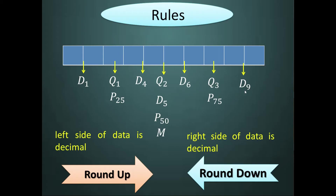Another example: if D sub 9 = 10.8, since D sub 9 is above 50% of the data, we round down: 10.8 becomes 10, meaning the location of the data is the 10th value. If the answer has no decimal, use it as is. Now let's apply these rules with the following examples.